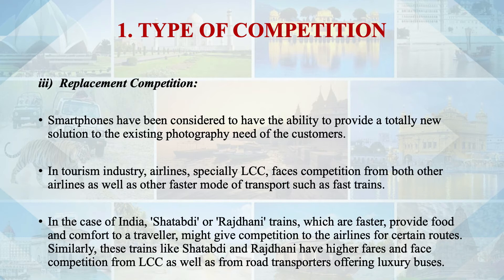Similarly, these trains like Shatabdi and Rajdhani have higher fares and face competition from LCCs as well as from road transporters offering luxury buses between certain destinations. Buses, trains, and airlines all offer transportation but are from different areas — surface transport and air transport — and can easily replace each other. That is replacement competition, or potential competition, which we have to think about especially when pricing a product.